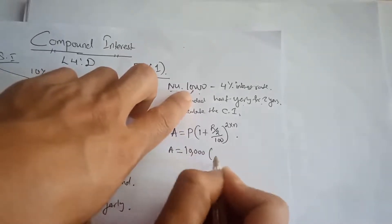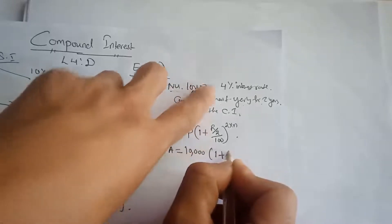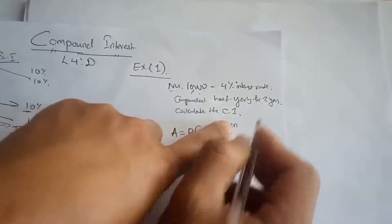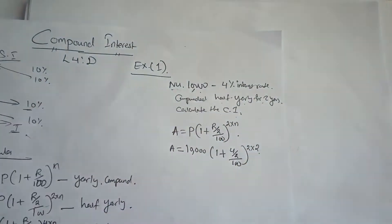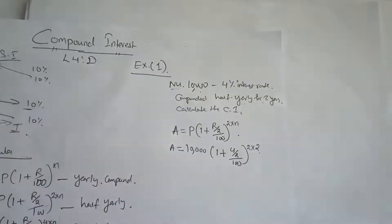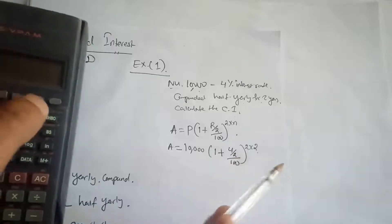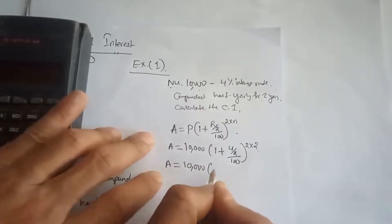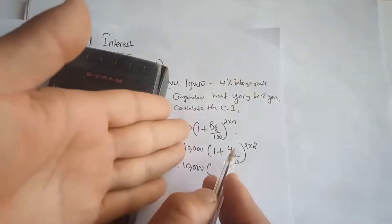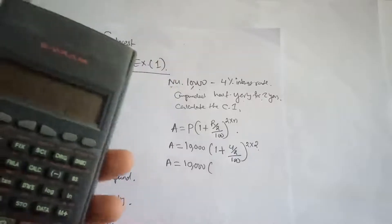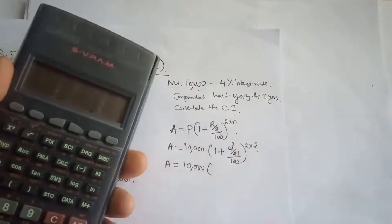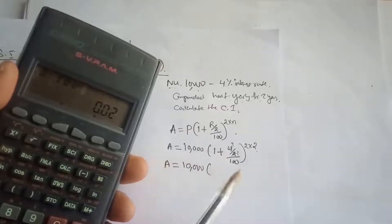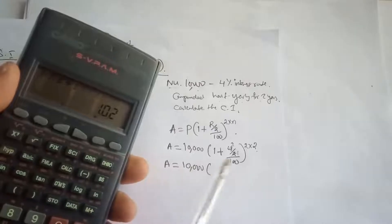Substituting the values: amount equals 10,000 multiplied by 1 plus 4 divided by 2, divided by 100, raised to 2 into 2. So 4 divided by 2 is 2, divided by 100 gives 0.02. Adding 1 gives 1.02, raised to the power of 4.